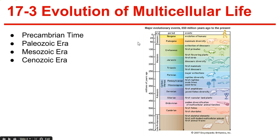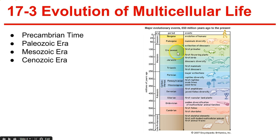During the Jurassic period, dinosaurs became the dominant species and the first bird, Archaeopteryx, appeared. Next, the Cretaceous period brought new forms of life including leafy trees, shrubs, and small flowering plants. Then, at the end of the Cretaceous, another mass extinction occurred, killing more than half of all plant and animal groups, and all of the dinosaurs.